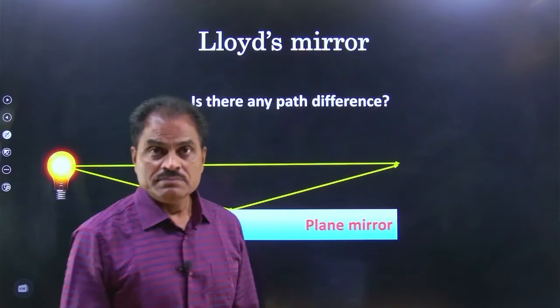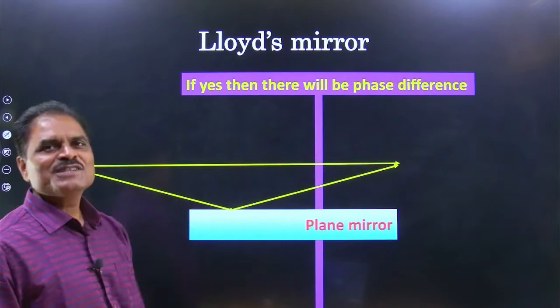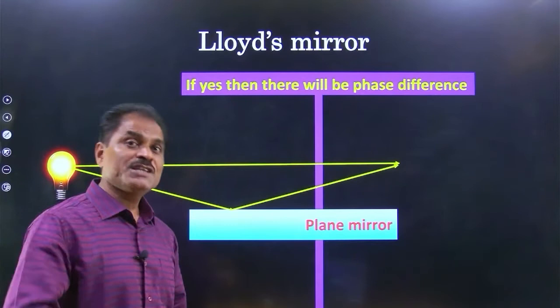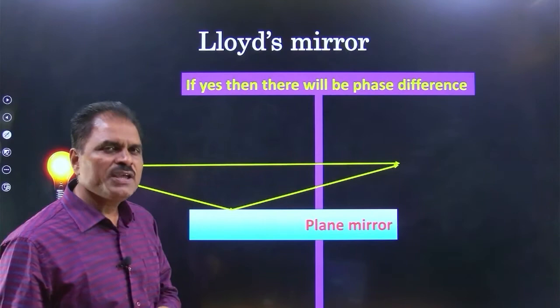Answer: path difference. अगर path difference है तो phase difference भी जरूर होगा. यह तो direct गया है, यह reflect होके आया है - reflect dense medium से, additional phase पाएगा. तो इसके path difference के कारण जो phase difference आएगा उसमें addition पाएगा, यह तो direct चले गा.